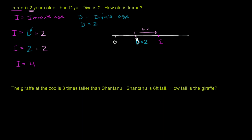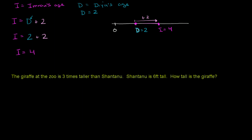If this is two right over here and you were to go up two more, you get to four. Imran's age is four. Let's try one more of these.